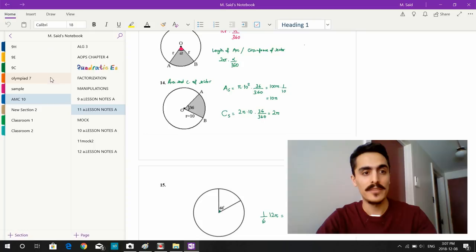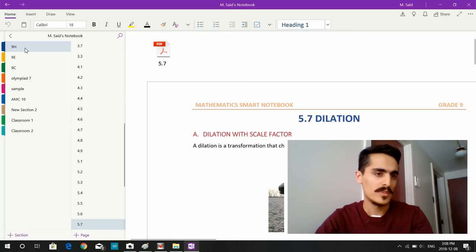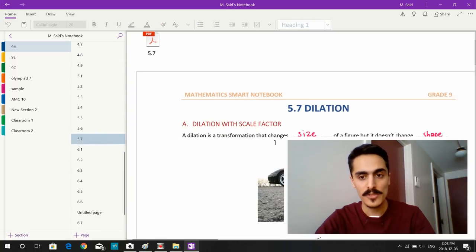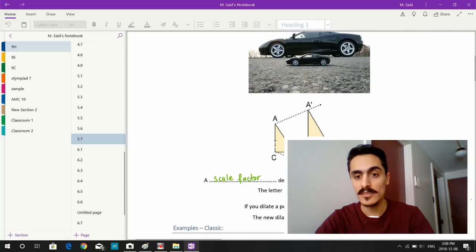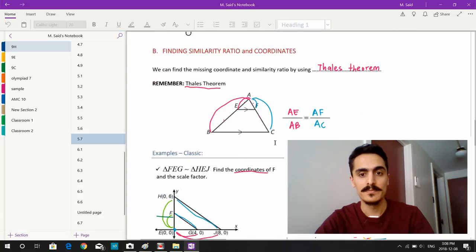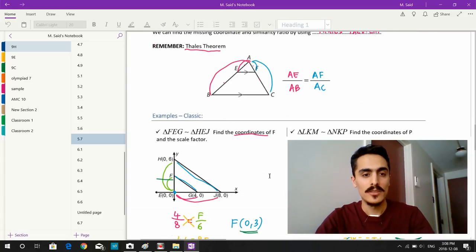I already have notebooks here on the left-hand side. You can see there are some levels of organization. At the very top level, I create notebooks for each classroom. Then I create sections. These are grade 9 classrooms. I click on one of them. So these are the sections I teach. Each section has their notes. Here if I click 5.7, this is the topic of dilation. Here you see the notes from last year grade 9 math classroom.